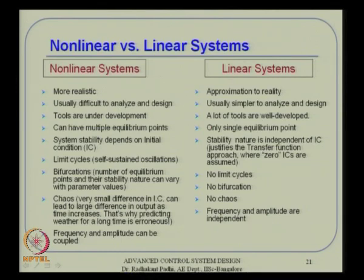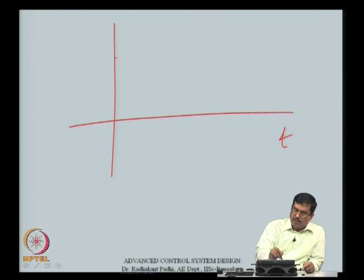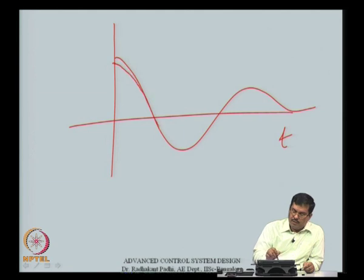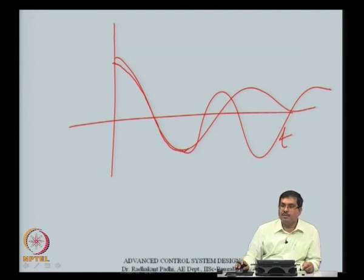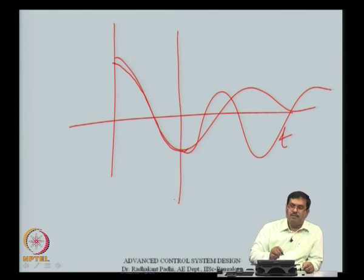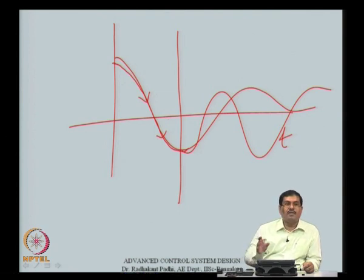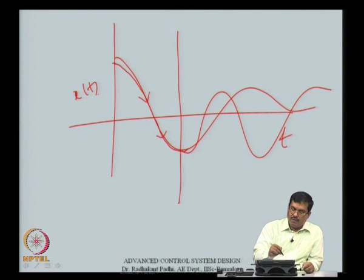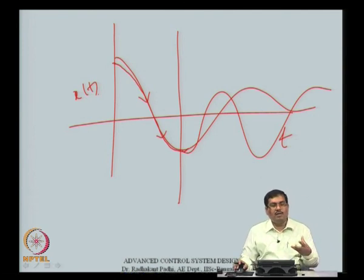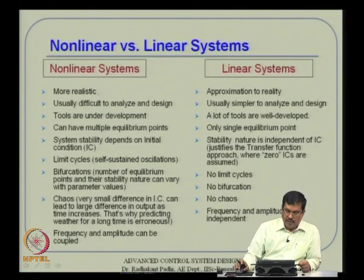Chaos means that very small differences in initial conditions can lead to large differences in output as time increases. A typical example is weather forecasting — weather prediction for a day or half a day is normally reliable, but prediction for a week is typically erroneous. This is because truncation errors in computation dominate after some time, making long-run predictions unreliable. That is the behavior of chaotic systems.